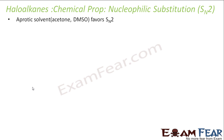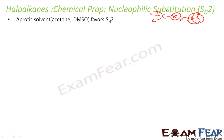Aprotic solvent favors SN2 reaction. Why? Because a protic solvent will try to attract the halogen X and encourage it to leave on its own, which would lead to SN1 reaction — the halogen leaves first, then a nucleophile attacks. But for SN2 we want the nucleophile to attack from the back side. With an aprotic solvent, there is no interference or extra affinity encouraging the halogen to leave, so the SN2 mechanism is undisturbed.